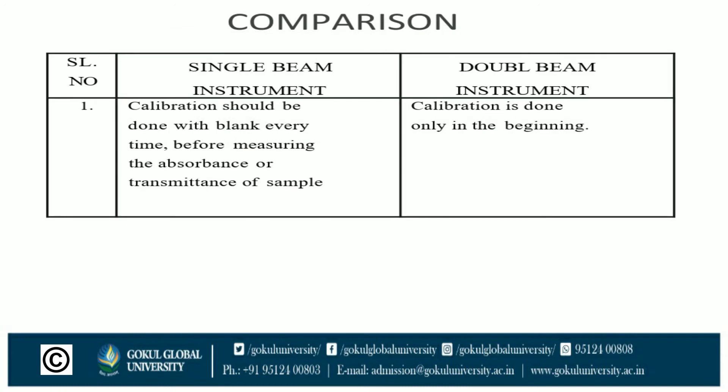Here is a comparison of both single and double beam spectrophotometers. For calibration: in the single beam, calibration should be done with a blank every time before measuring the absorbance or transmittance of a sample. In the double beam, calibration is done only once at the beginning.